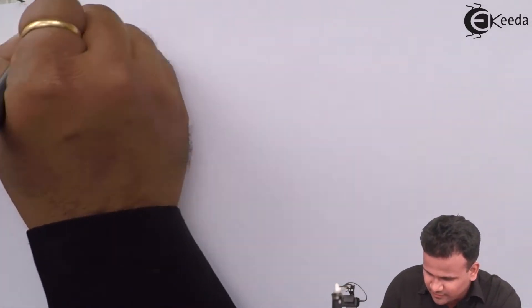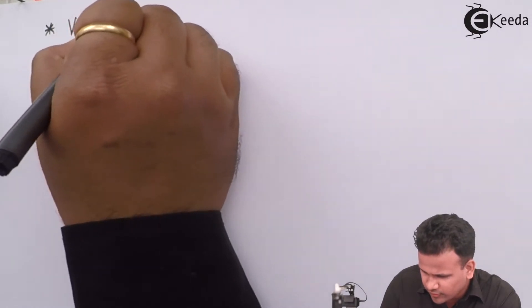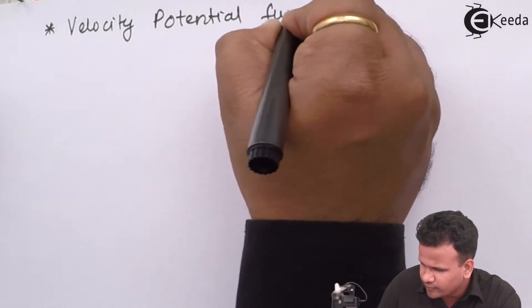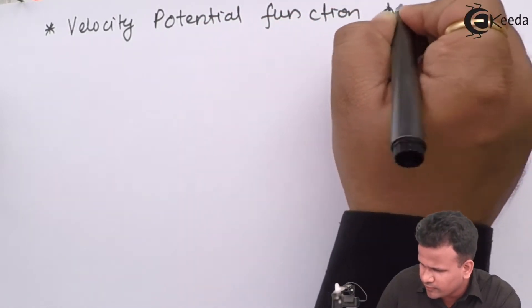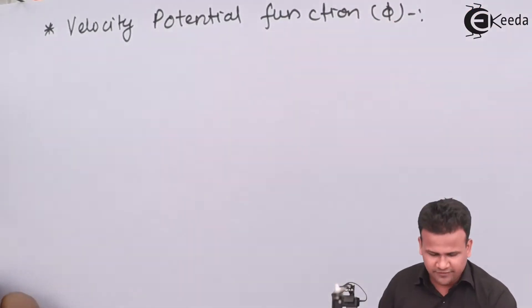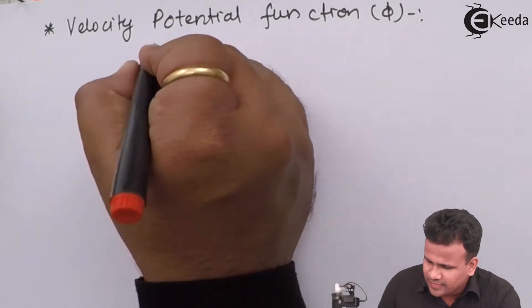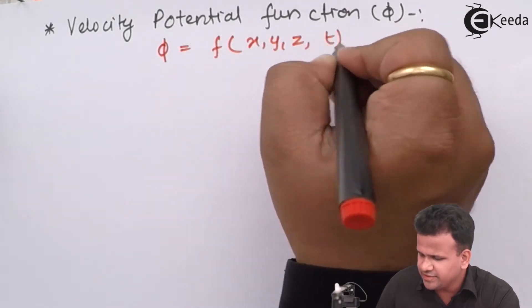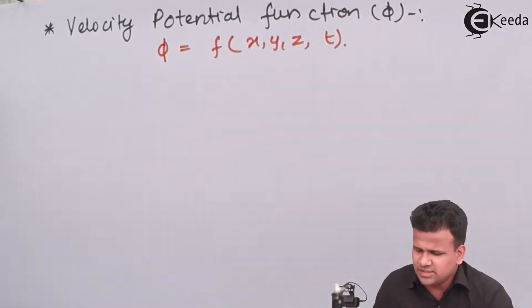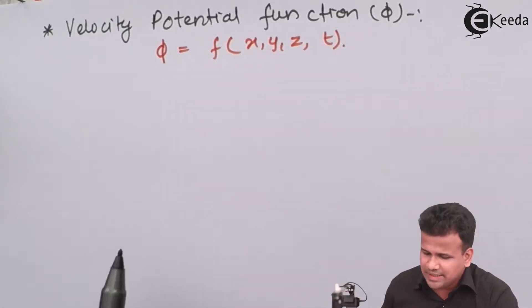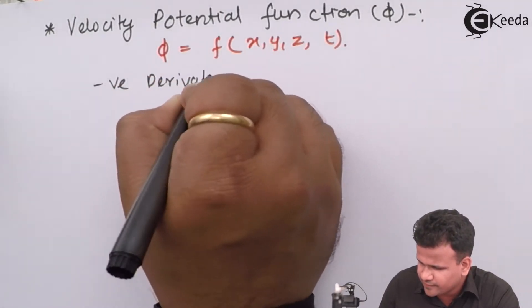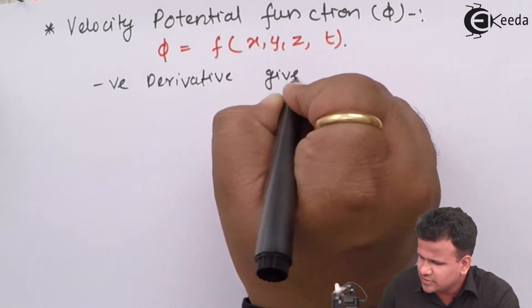Let us study what is the velocity potential function. The velocity potential function specifies that phi is a function of x, y, z, and t. That means it is a scalar function of space coordinates as well as time, whose negative derivative gives velocity.